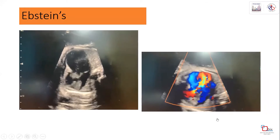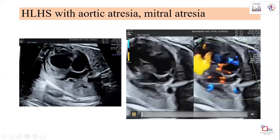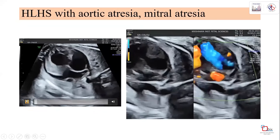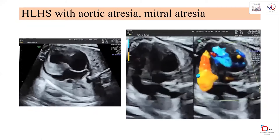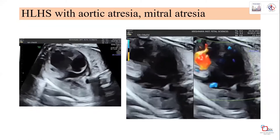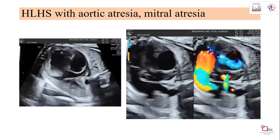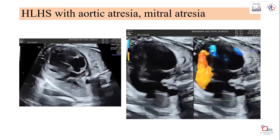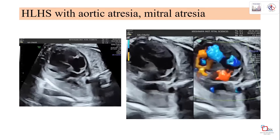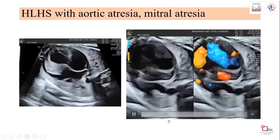Even on low-end machines, a great deal can be diagnosed with color Doppler. This case shows hypoplastic left heart syndrome with aortic atresia and mitral atresia - the blood flow is absent, and the aorta is not seen in the three-vessel view. Following the six cardiac segments systematically from normal findings allows us to differentiate the abnormal.